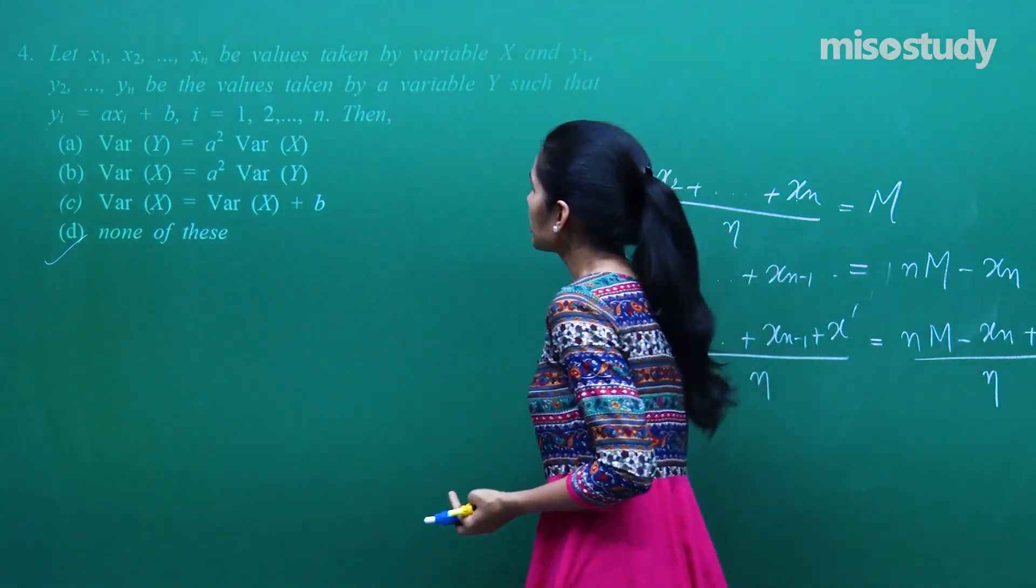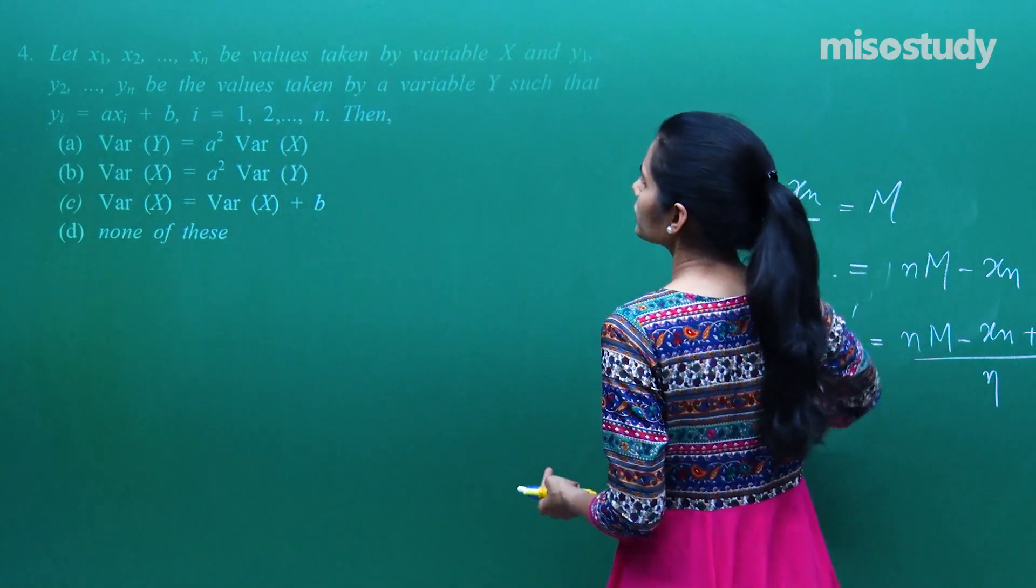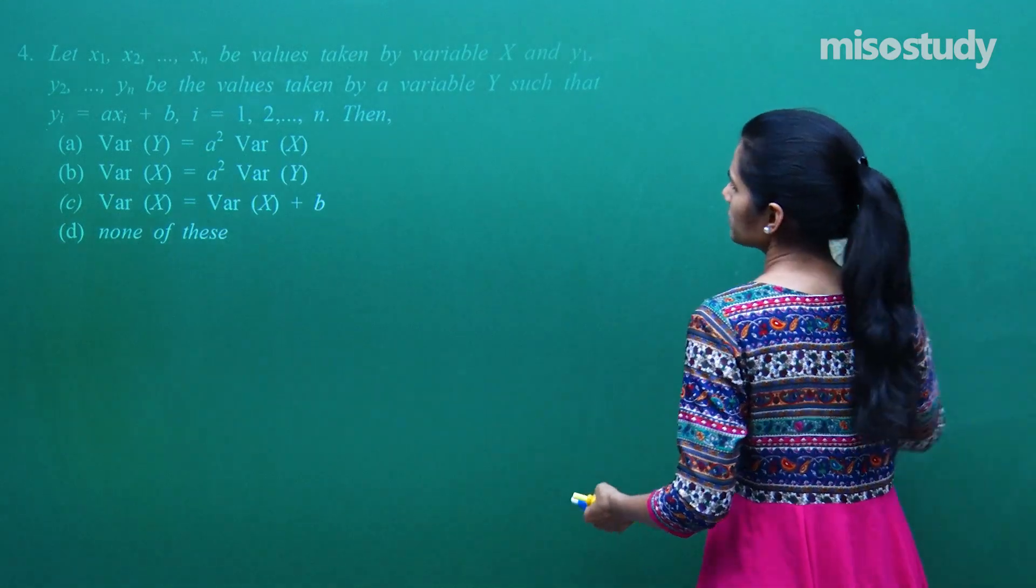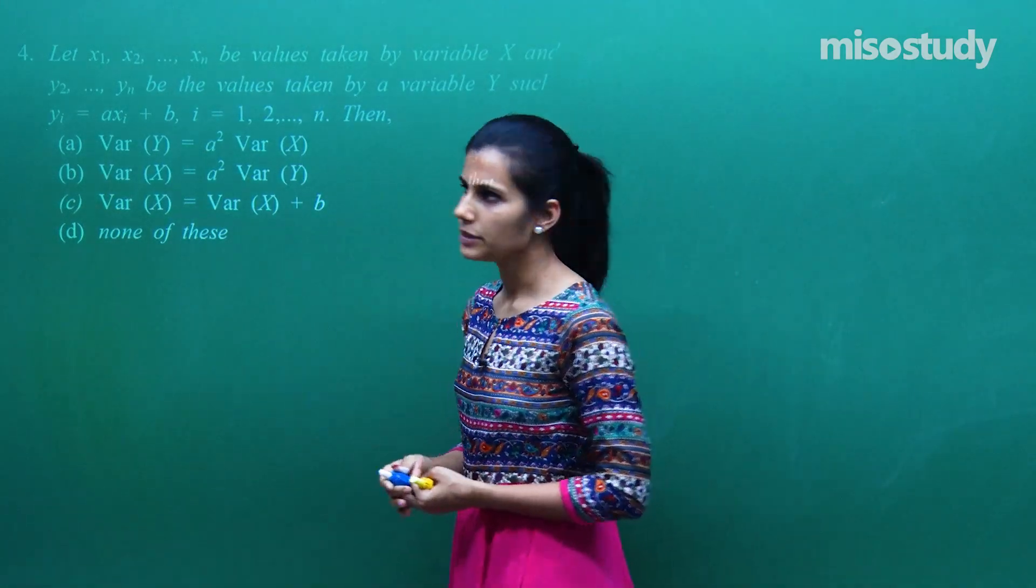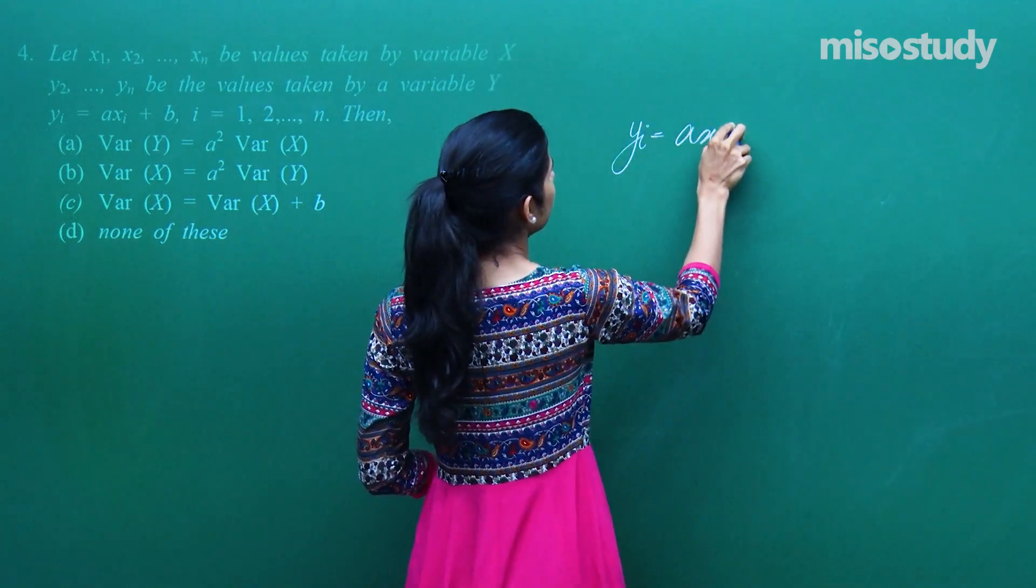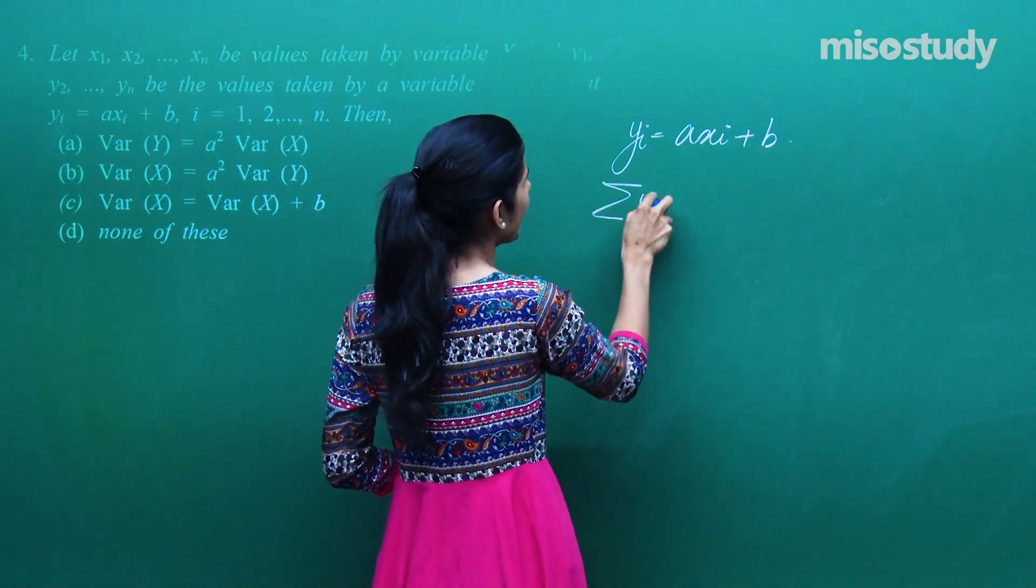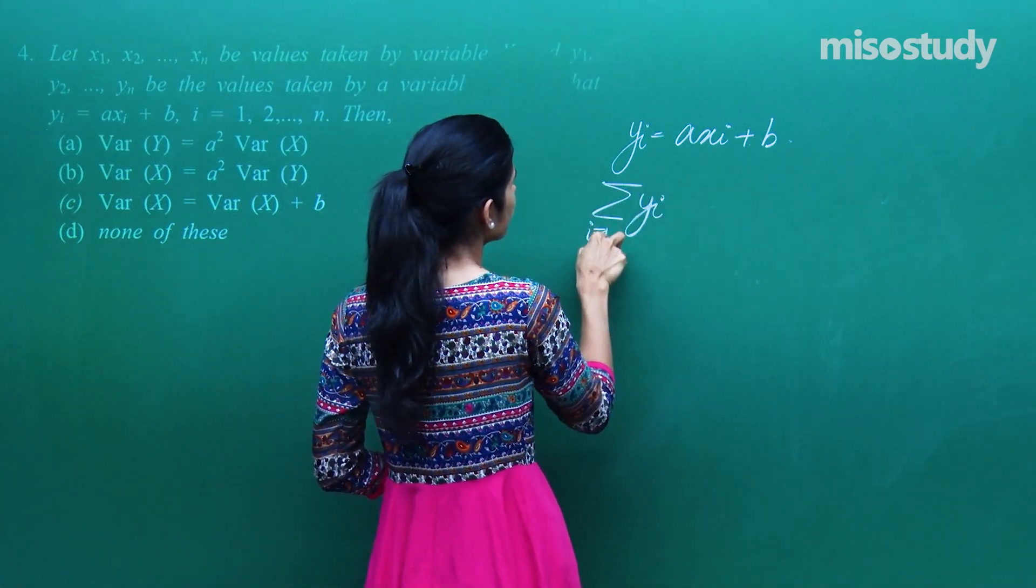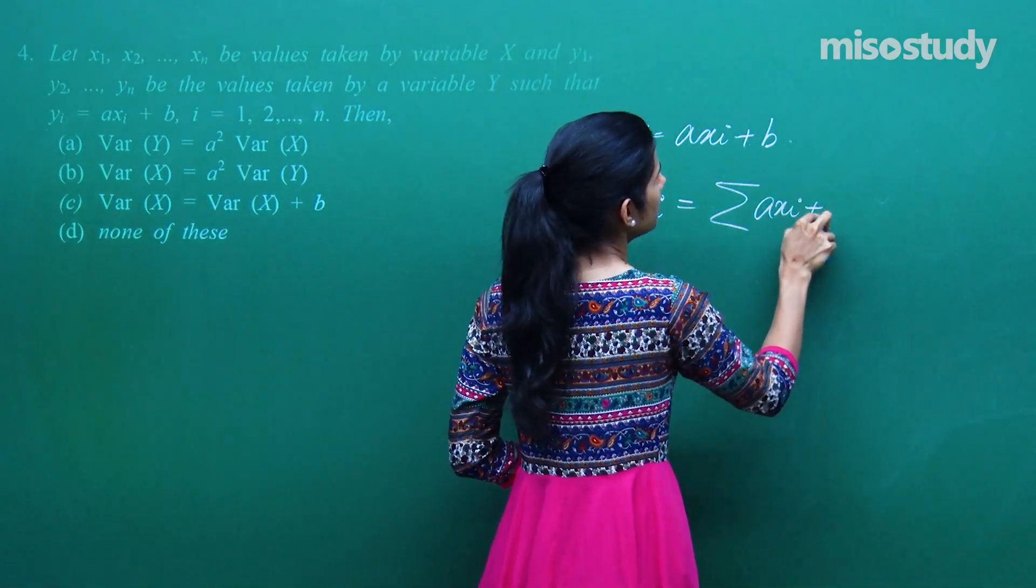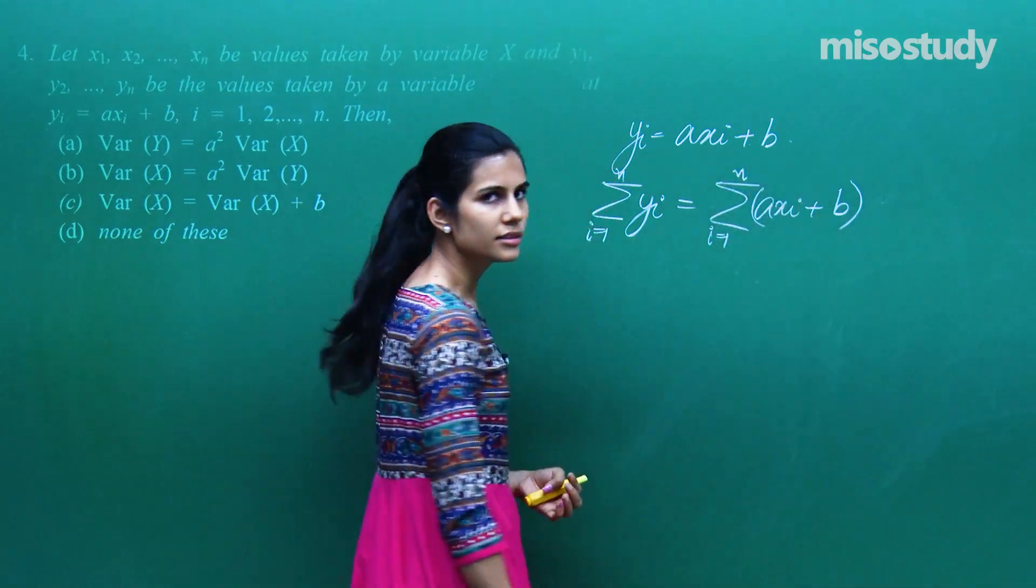Let x1, x2, x3 up till xn be values taken by the random variable x and y1, y2, y3 be taken by variable y such that yi is axi plus b. Then variance ke beech mein relationship batana hai between x and y. Agar yi, axi plus b ke jitna hai for all i varying from 1 to n, toh agar mein add karo, axi plus b, i going from 1 to n.